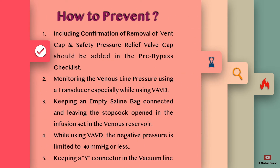How to prevent this: include confirmation of removal of the vent cap and safety pressure relief valve cap in the pre-bypass checklist, and make sure it has been checked and read aloud for all team members. Monitor the venous line pressure using a transducer, especially while you are using a VAVD device.